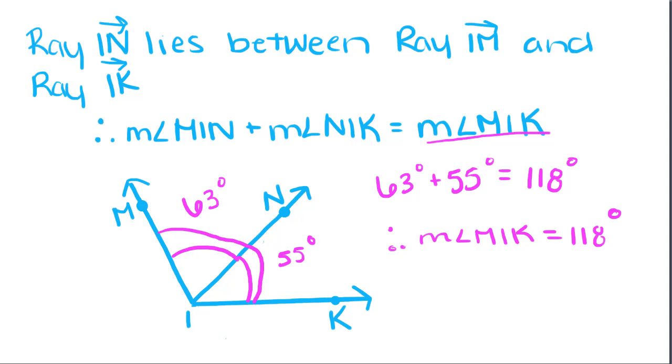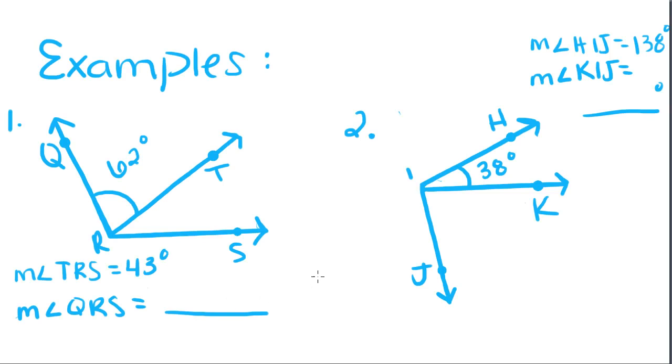Okay, so now that we know that, we're going to do a couple examples using these two properties. So I know that angle QRT is equal to 62 degrees. If the measure of angle TRS, which is this angle right here, is equal to 43 degrees, what is the measure of this whole angle? So, I can take 62 plus 43, and I get 105, so the big angle, angle QRS, is equal to 105.